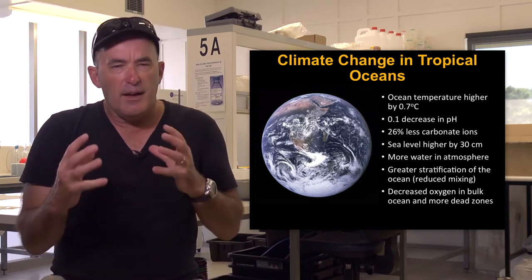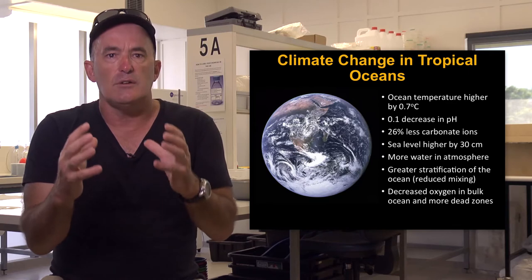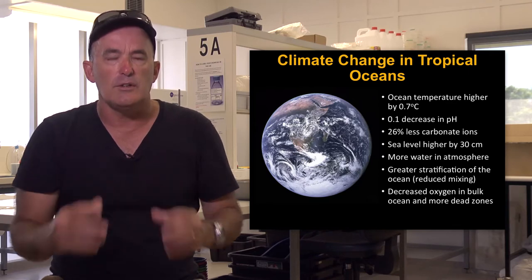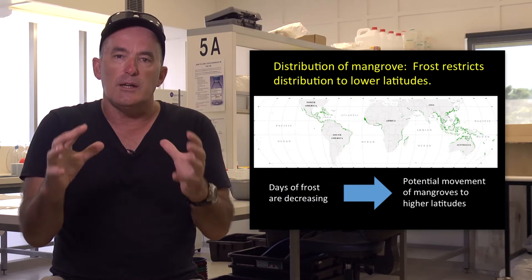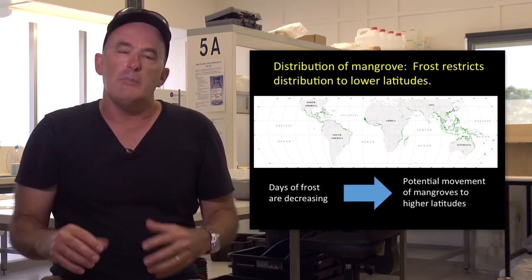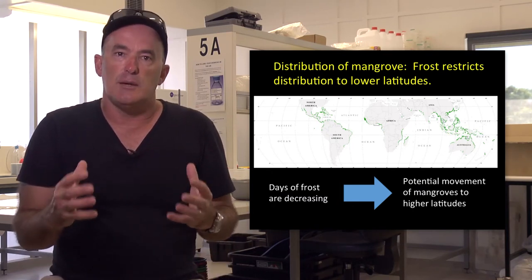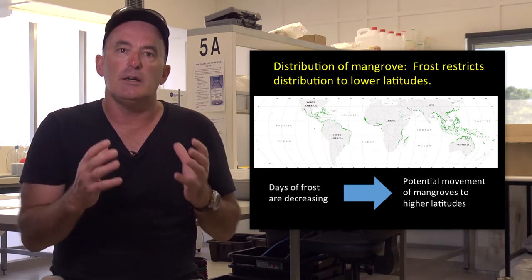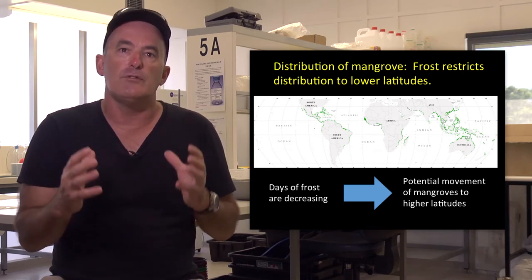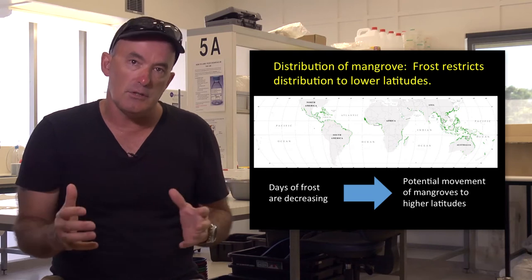But are these changes enough to have an effect on tropical coastal ecosystems? Let's look at our three major ecosystems in turn. Mangroves are sensitive to changes in temperature, with changes potentially modifying global mangrove distributions, extending them to higher latitudes.